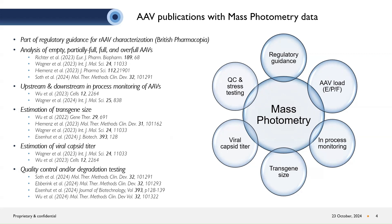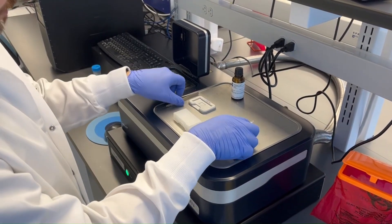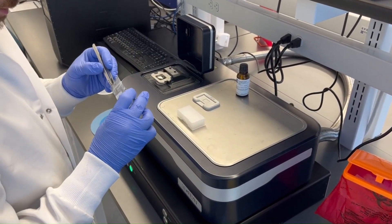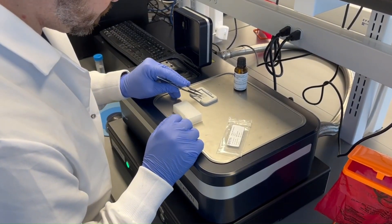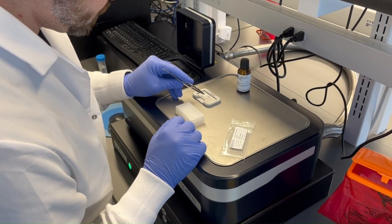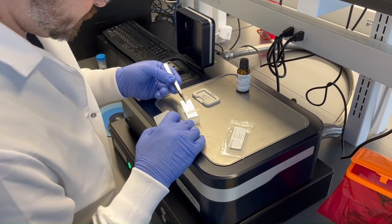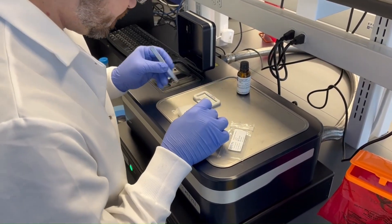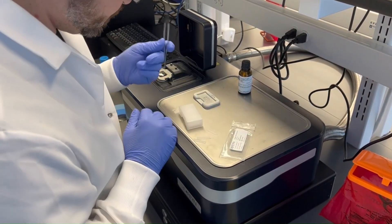We will now go to the hands-on demonstration for measuring the empty-full ratio of AAVs. Here we see the SAMX MP. We will set up an experiment by first placing a silicon gasket on the assembly tool, then place a glass slide on top of the gasket.